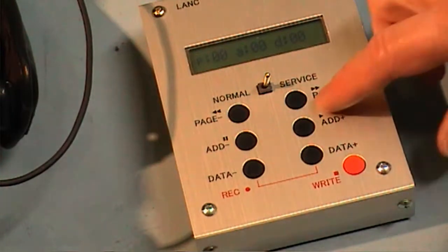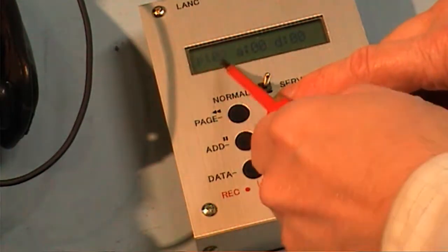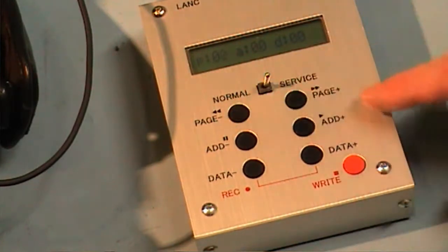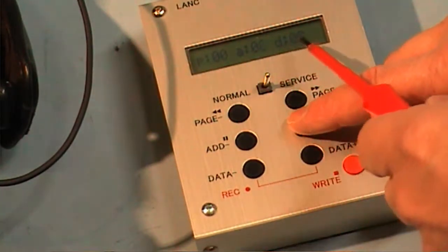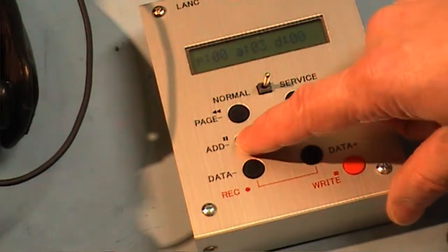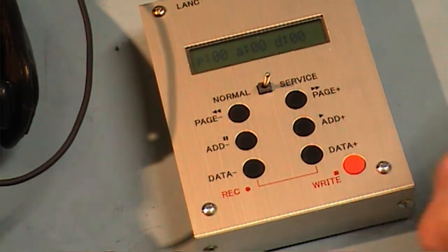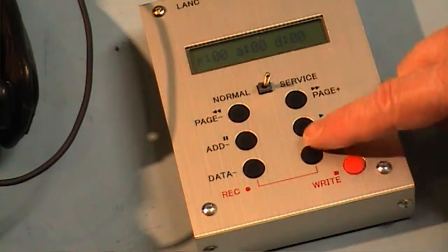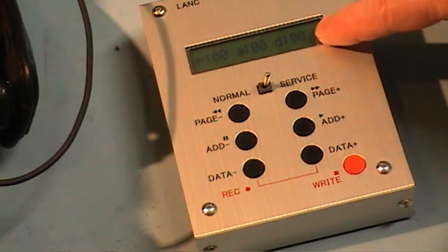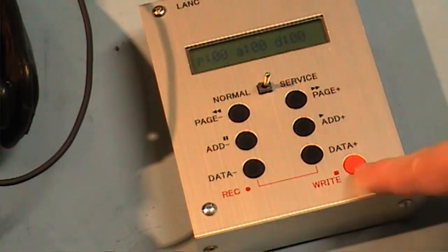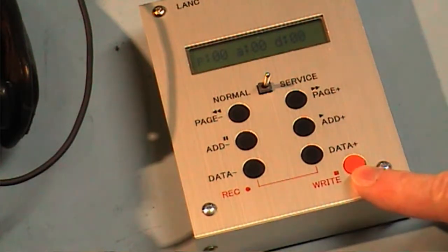To change the page, you press these page buttons, and you can see it change there on the page. To change the address, just go up and down with those two buttons. And these two buttons then are for changing the data. As you can see, the zero-zero in the data on that address. And sometimes you have to actually write the data to that address, but in your service manual it will tell you when to write the data.